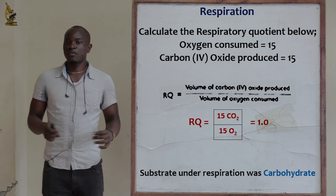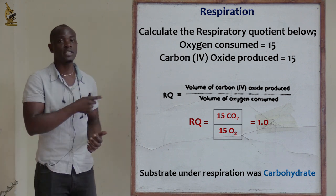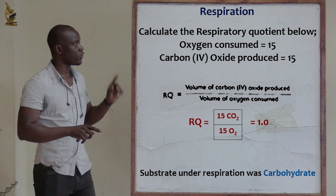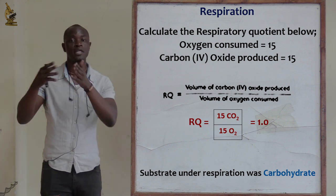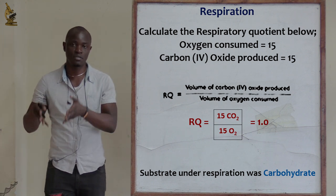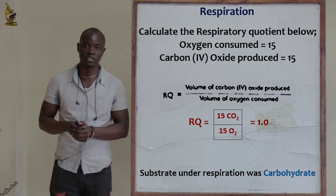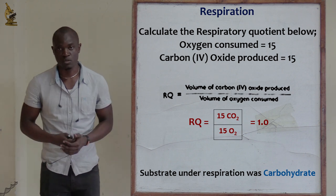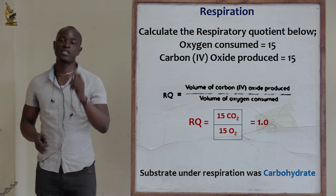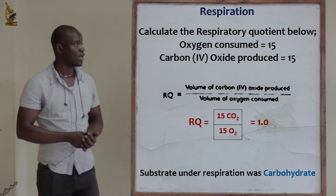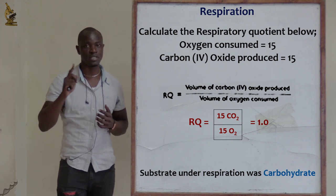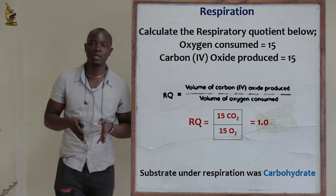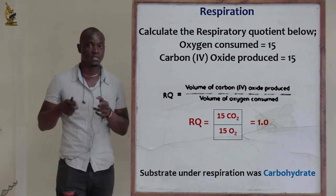Let's look at questions involving respiratory quotient calculations. The formula is: RQ = volume of CO₂ produced / volume of O₂ consumed. For example, if oxygen consumed is 15 and carbon dioxide produced is 15, then RQ = 15 / 15 = 1.0. This indicates that carbohydrates were being oxidized. So RQ = 1.0 represents carbohydrates.